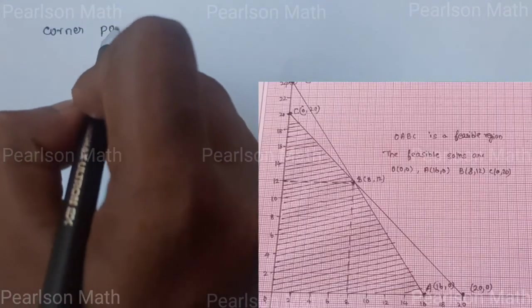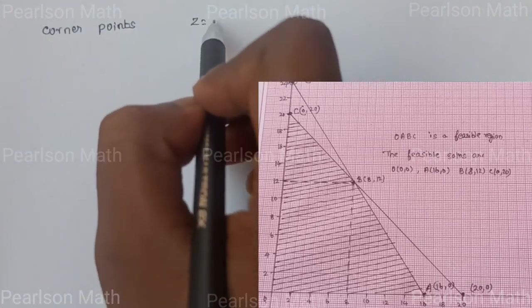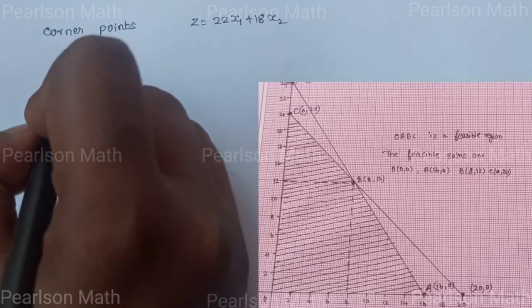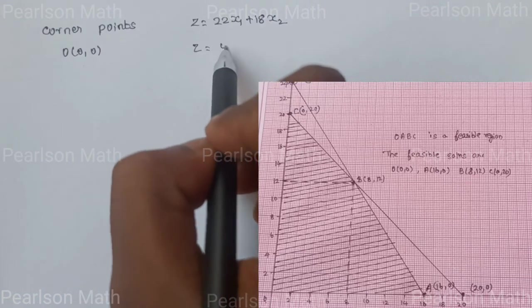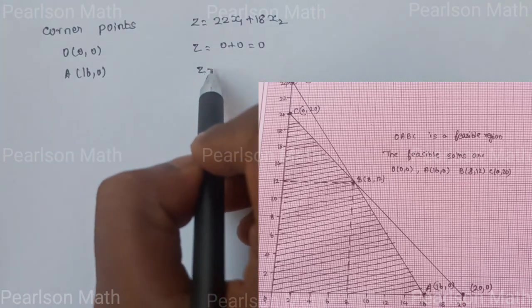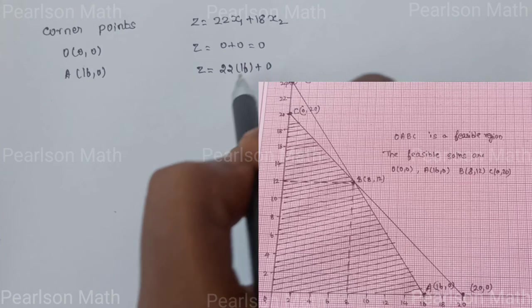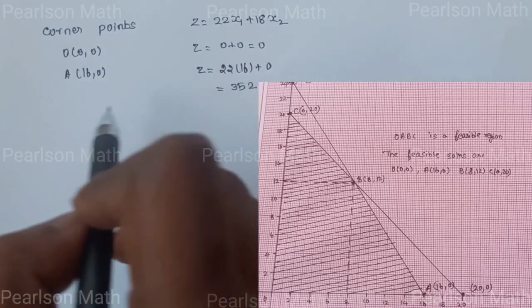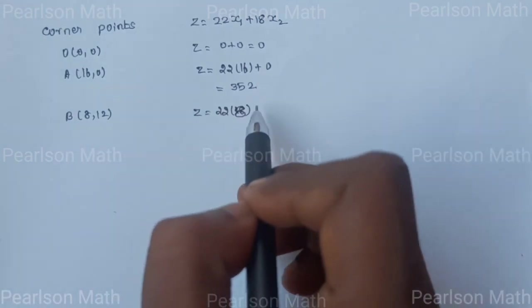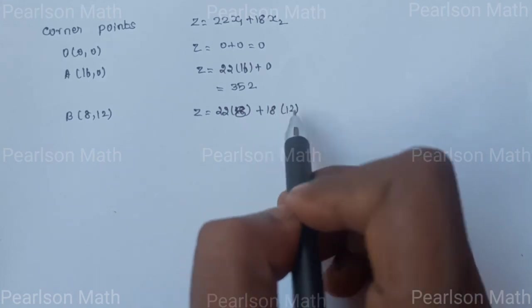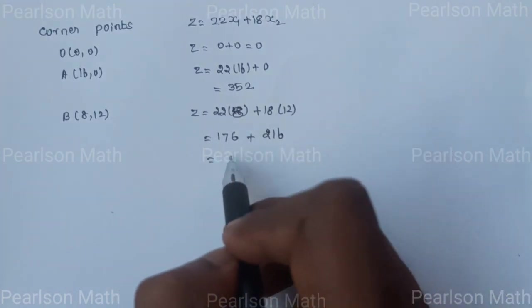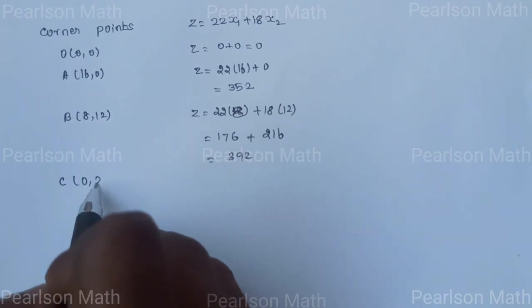Now evaluate the corner points for maximum value. Point O (0, 0): Z equals 0. Point A (16, 0): Z equals 22(16) plus 18(0) equals 352. Point B (8, 12): Z equals 22(8) plus 18(12) equals 176 plus 216 equals 392. Point C (0, 20): Z equals 18(20) equals 360.